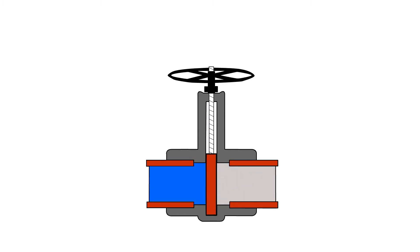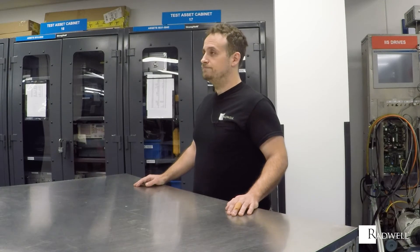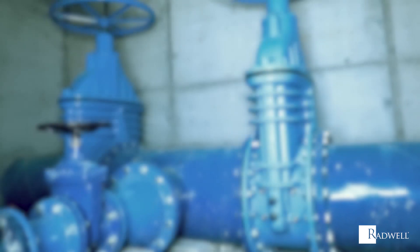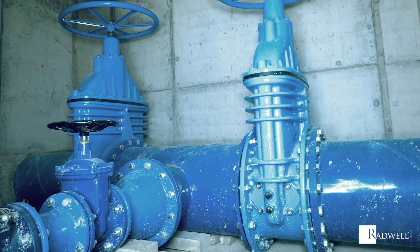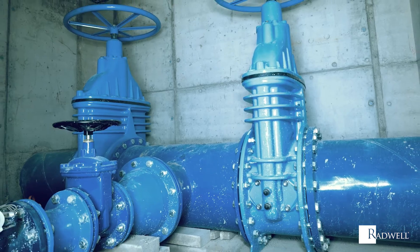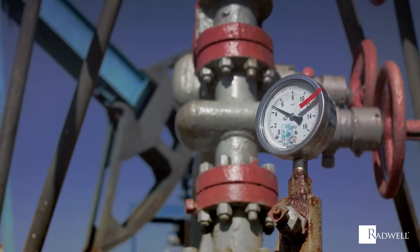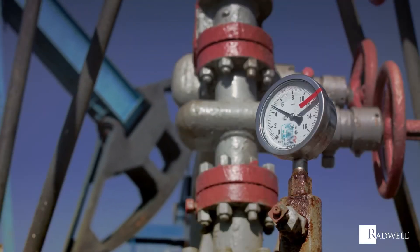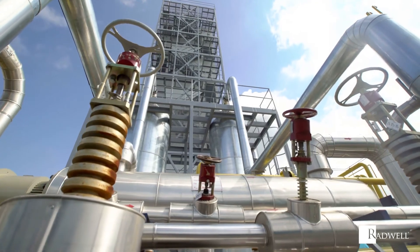When the wheel is turned the opposite way, the gate is lifted out of the way and the fluid can flow through. This basic working principle allows gate valves to be either fully opened or fully closed. This in turn means gate valves cannot regulate the amount of fluid flow.